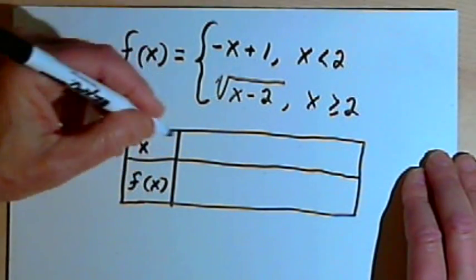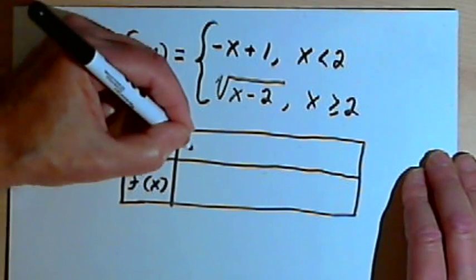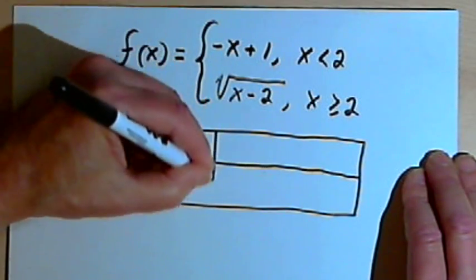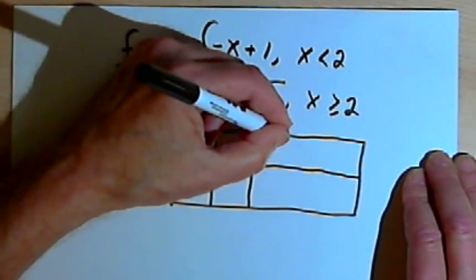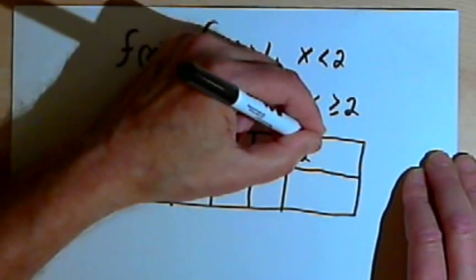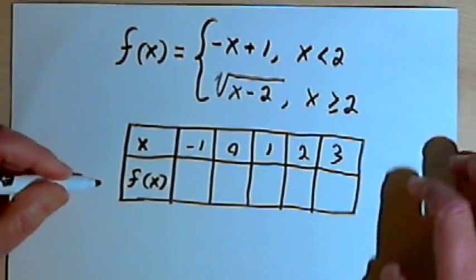Let's find the f values for, let's say, negative 1, 0, 1, 2, and 3.